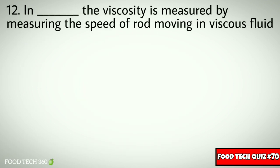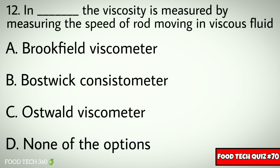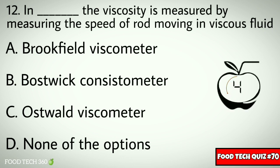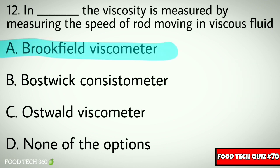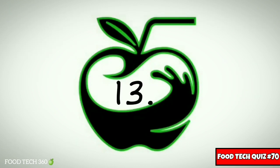Q12. In dash, the viscosity is measured by measuring the speed of the rod moving in viscous fluid. Options: A. Brookfield viscometer, B. Bostwick consistometer, C. Asphalt viscometer, D. None of the options. Correct answer: A. Brookfield viscometer.